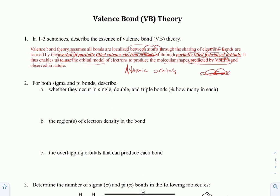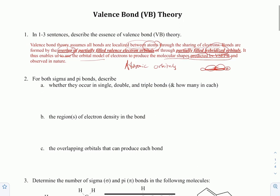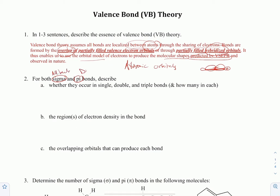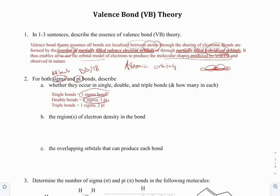There are two types of bonds you need to know about: sigma bonds and pi bonds. A sigma bond is present in all bonds. Pi bonds are only present in double bonds or triple bonds. A single bond has one sigma bond; a double bond has a sigma and a pi; and a triple bond has a sigma and two pi.